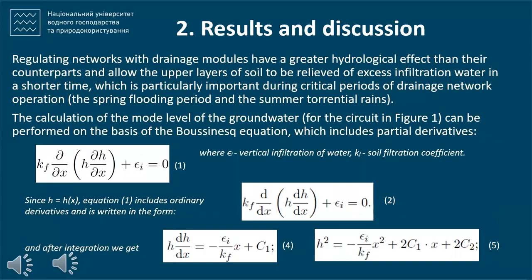Regulating networks with drainage modules have a greater hydrological effect than their counterparts and allow the upper layers of soil to be relieved of excess infiltration water in a shorter time, which is particularly important during critical periods of drainage network operation: the spring flooding period and the summer torrential rains.